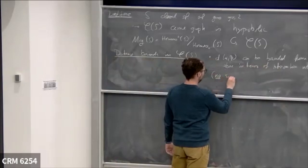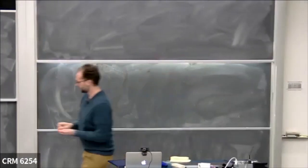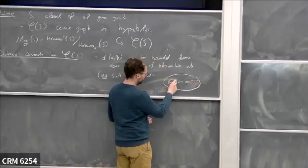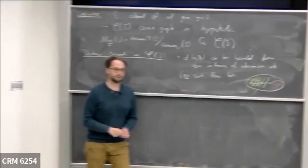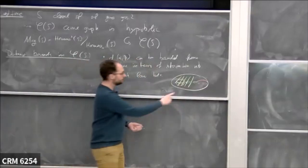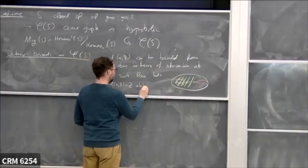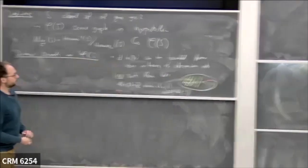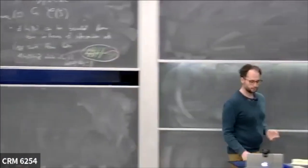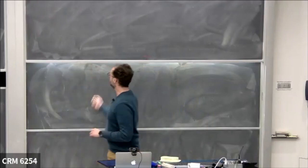No such lower bounds from intersection number exist. I can take a curve on the surface and draw three curves where the green and yellow can have arbitrary intersection while still being distance two in the curve graph. So the distance can be two while the intersection number can be arbitrarily large. This is why it's much harder to get lower bounds — the shape of the curve can change drastically in one or two steps in the curve graph.